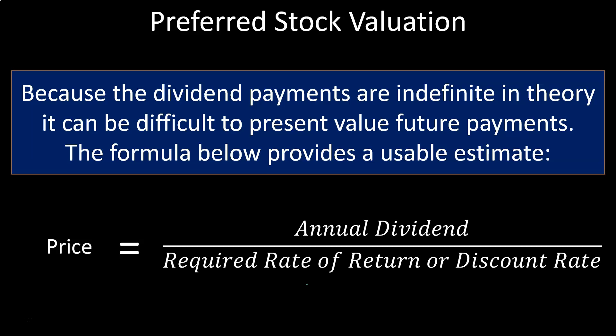Bonds had some complexity because they have a series of payments and then a face amount at the end — like a balloon payment. So for bonds we calculated the present value of an annuity plus the present value of that face amount at maturity.